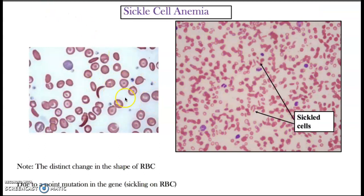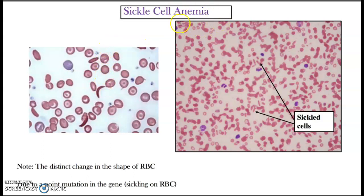Finally, regarding sickle cell anemia: when we have a different shape like this — caused by a mutation in a gene — we get sickling of the red blood cells. This results in a short lifespan and the cell cannot transport oxygen, which is the main function. That is why it produces anemia — a lower capacity to transport oxygen.